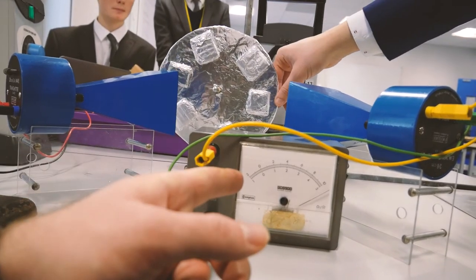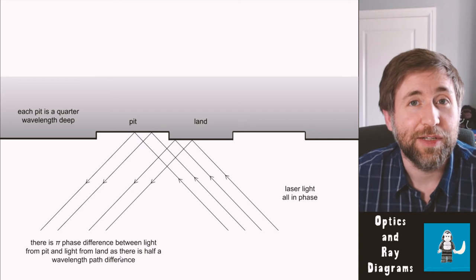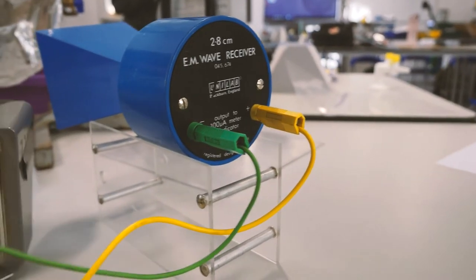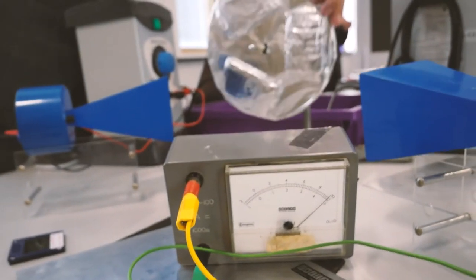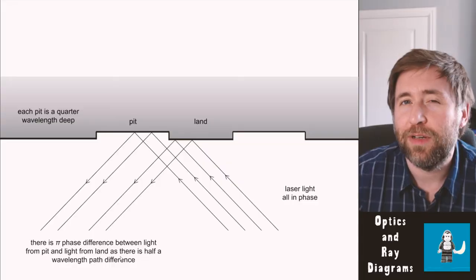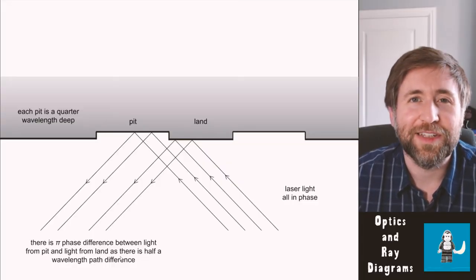And the microwave emitter and receiver is a 2.8 centimeter microwave. So they've used bumps to represent the lands and then the surface of the disc to represent the pits. And the bumps are about three quarters of a centimeter, something like that, deep.